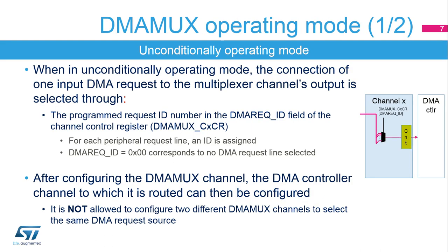The DMA-MUX request multiplexer enables routing a DMA request line between the peripherals and a DMA channel in unconditionally operating mode. When the multiplexer is set, it ensures the actual routing of DMA request acknowledged control signals. The connection of a peripheral request to the multiplexer channel's output is selected through the programmed request ID in the DMA-REQ-ID field of the channel control register DMA-MUX-CX-CR. For each peripheral request line, an ID is assigned. DMA-REQ-ID equals 0 corresponds to no DMA request line selected. After configuring the DMA-MUX channel, the DMA controller channel to which it is routed can be configured.